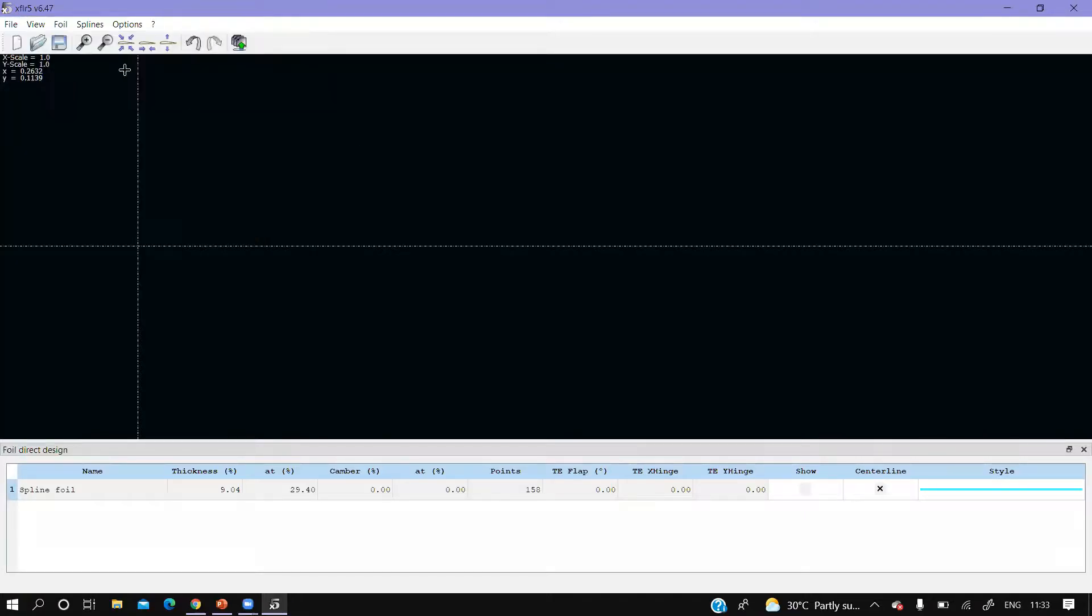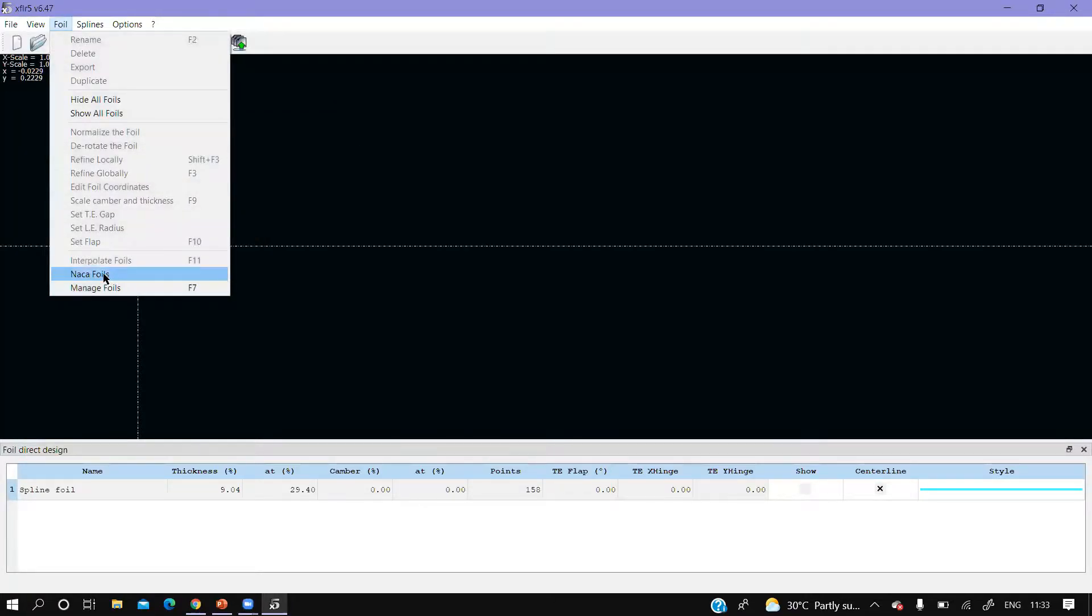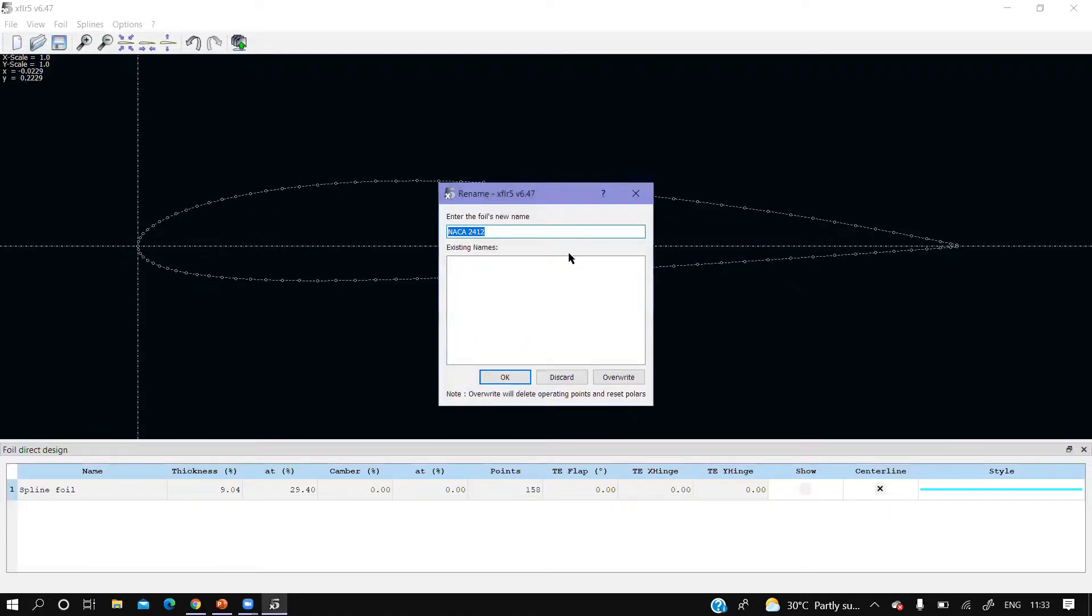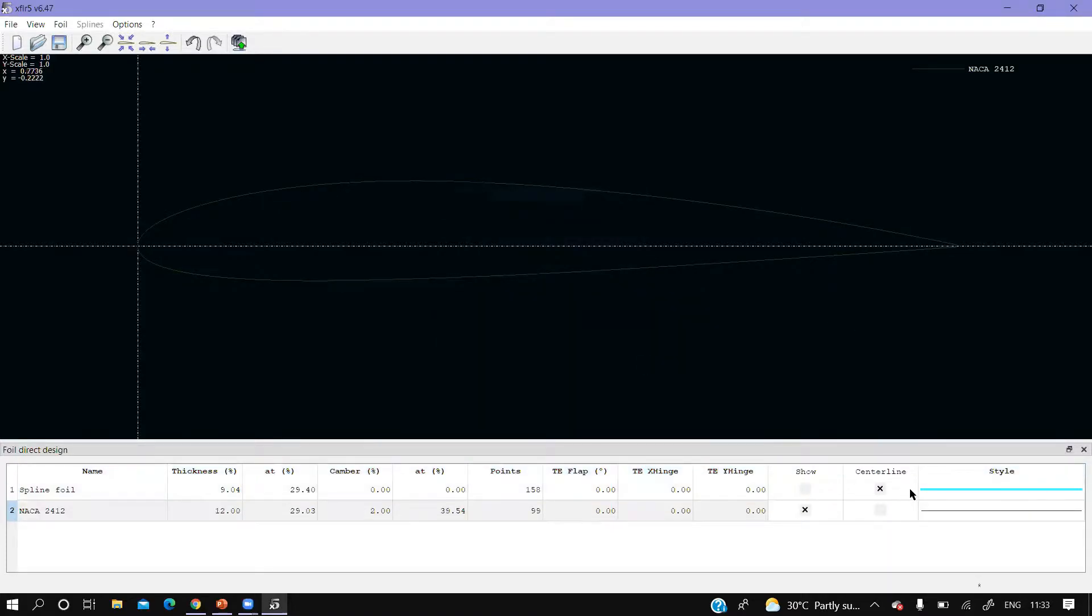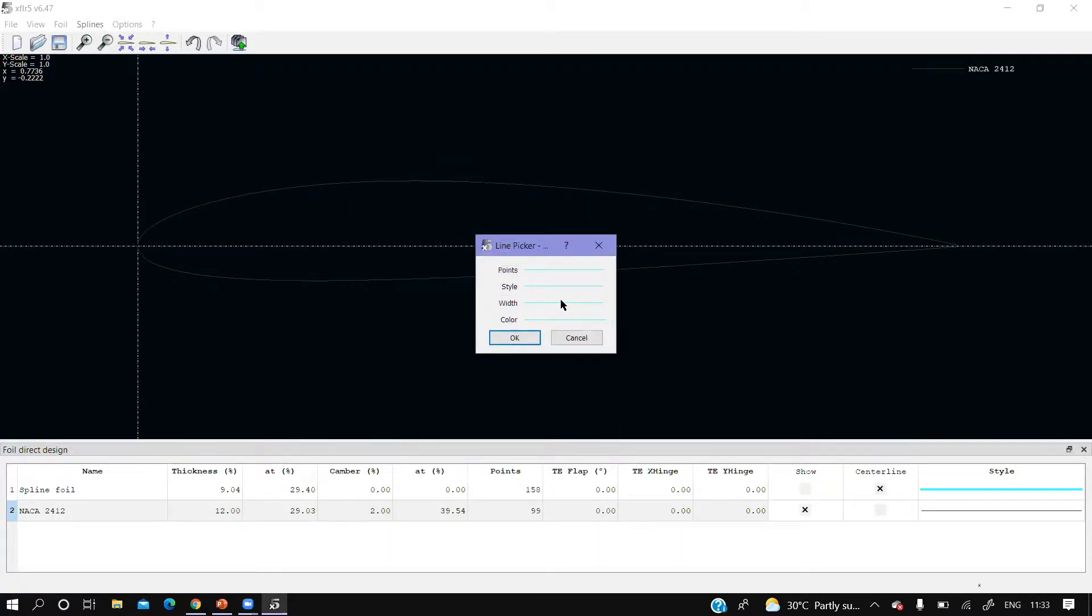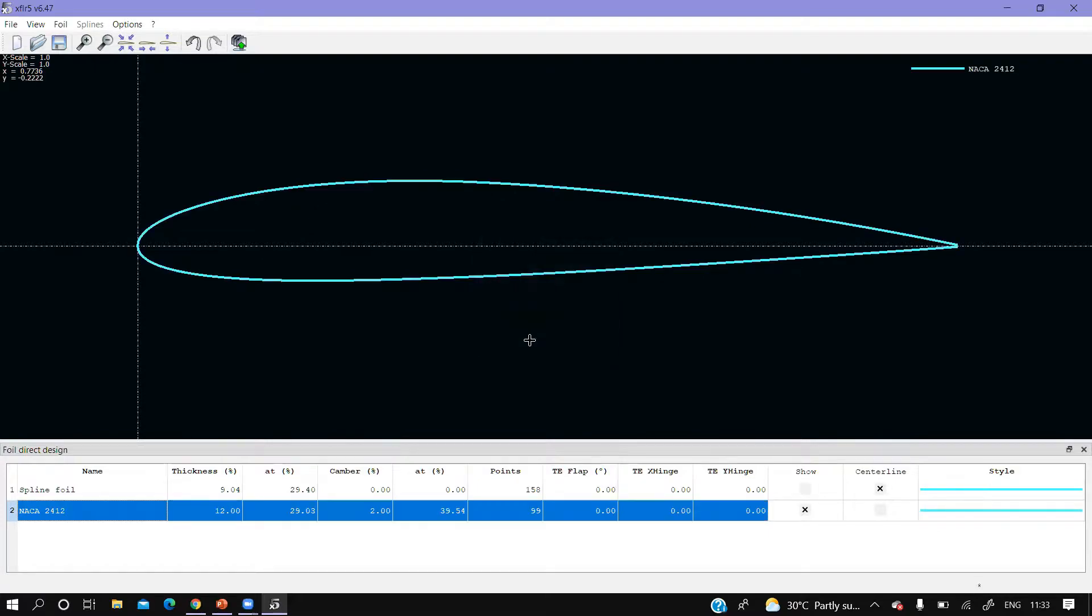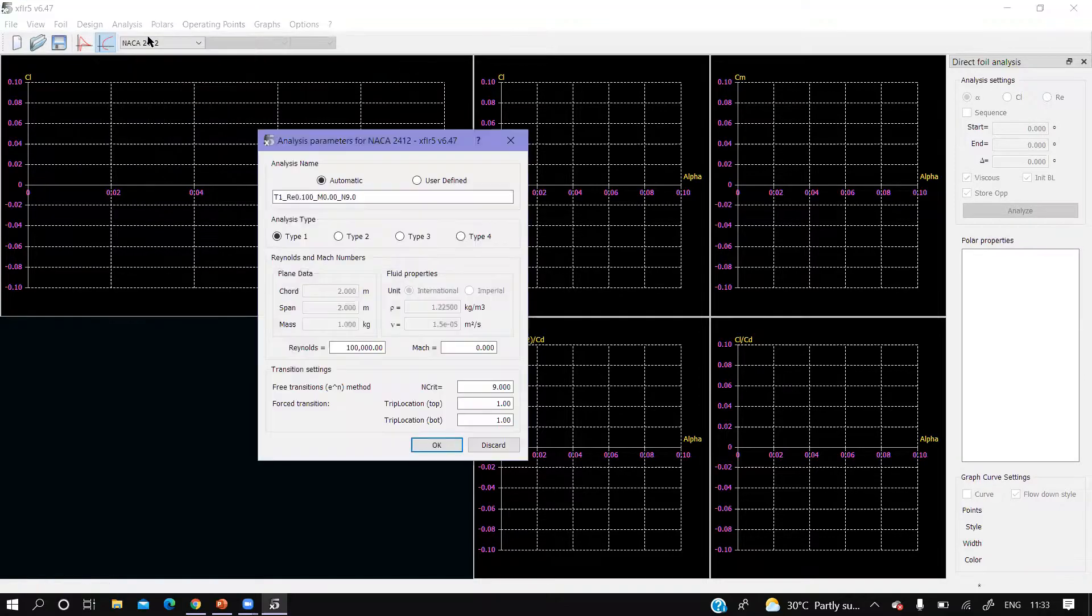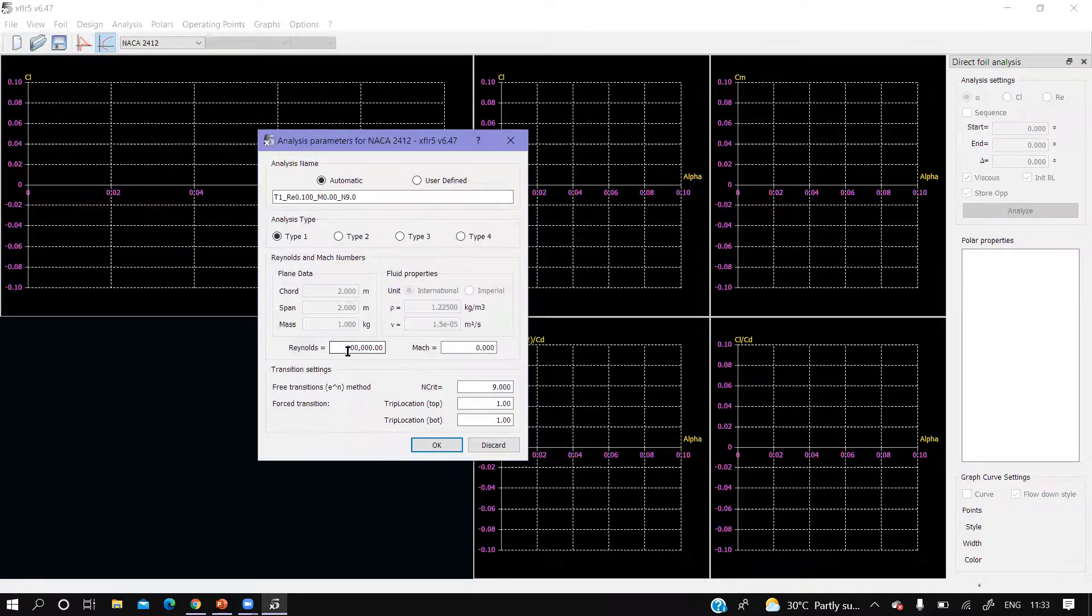Go to foil, NACA foils. Let's give it NACA 2412. Change color, give it blue. By pressing Control+5 we come to analysis. Define analysis - the name of the analysis is by default, Reynolds number 0.1 indicates 1 lakh (100,000), Mach number zero.